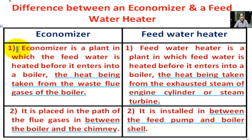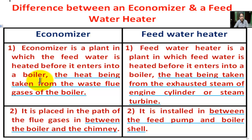Number one: an economizer is a plant in which the feed water is heated before it enters into a boiler, the heat being taken from the waste flue gases of the boiler.